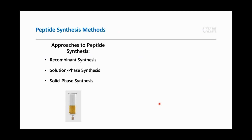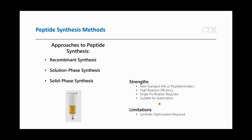That leads us to solid phase synthesis, which is the method most used today. It gives access to unnatural amino acids and high reaction efficiencies. Because our peptides are linked to the solid support, we can add reagents and drain them away while keeping our peptides attached to the beads — requiring only one workup and one purification. The ease of adding and draining reagents allows this process to be automated, though some optimization may be required as not every sequence is easy to make.